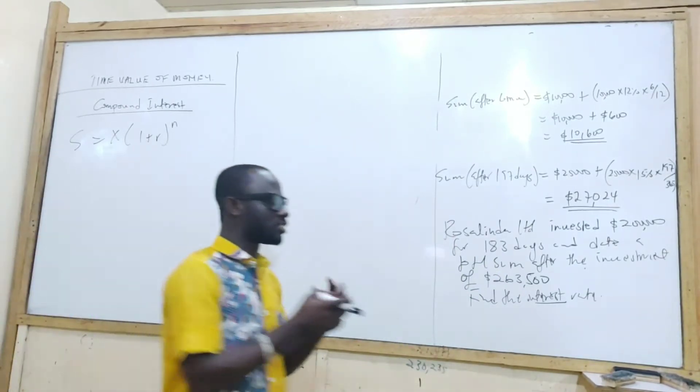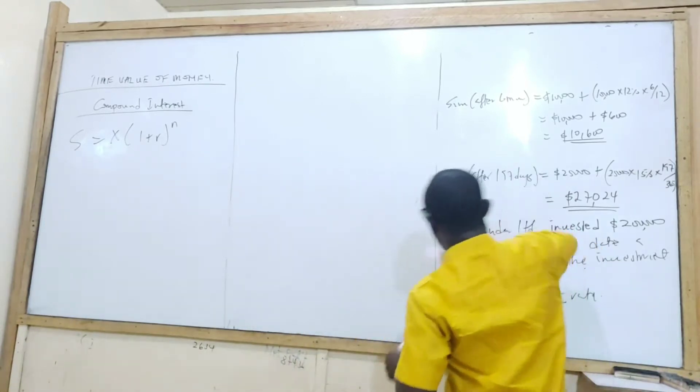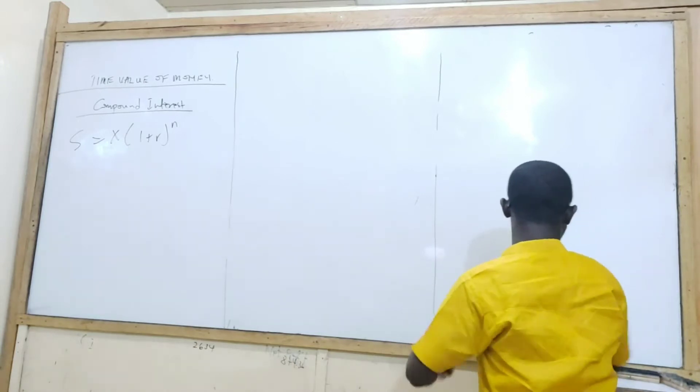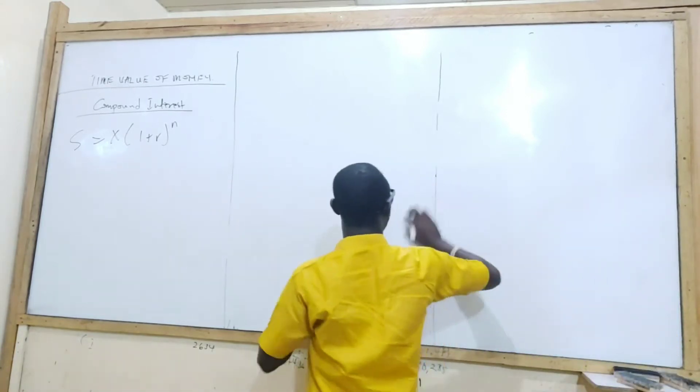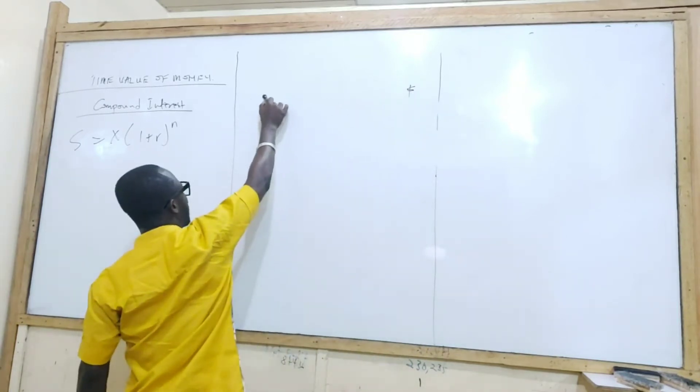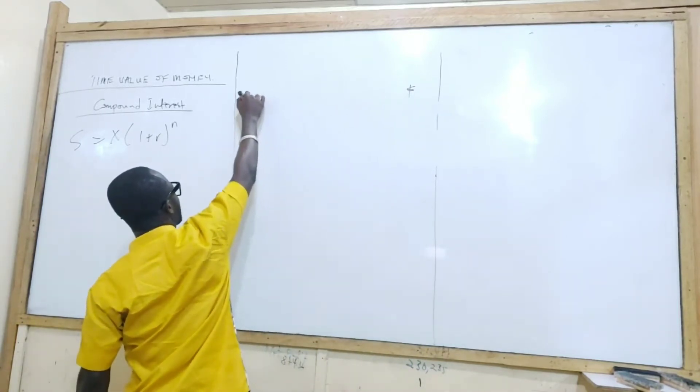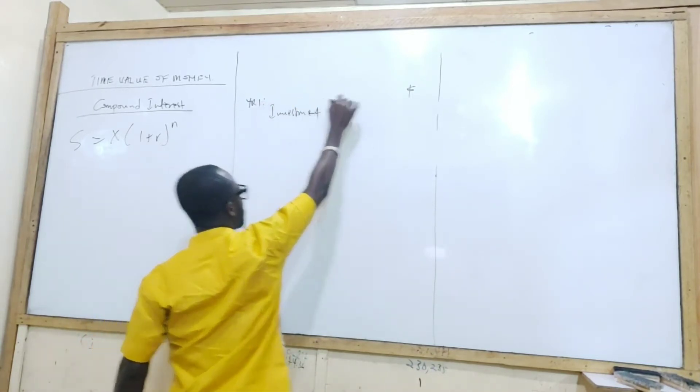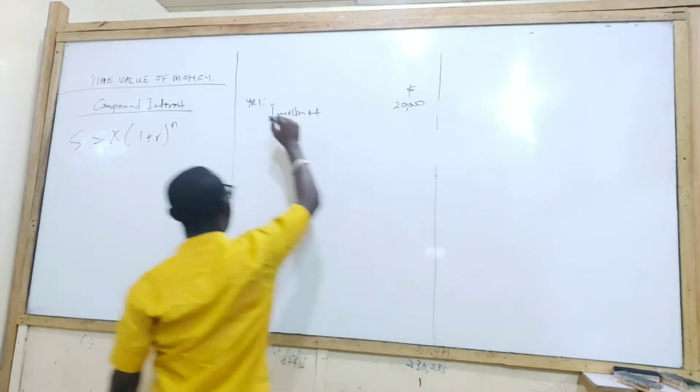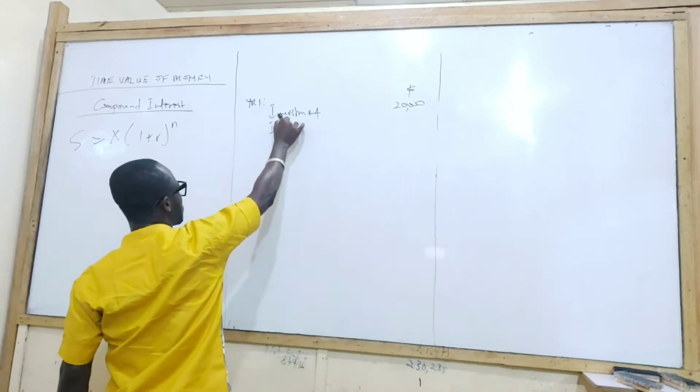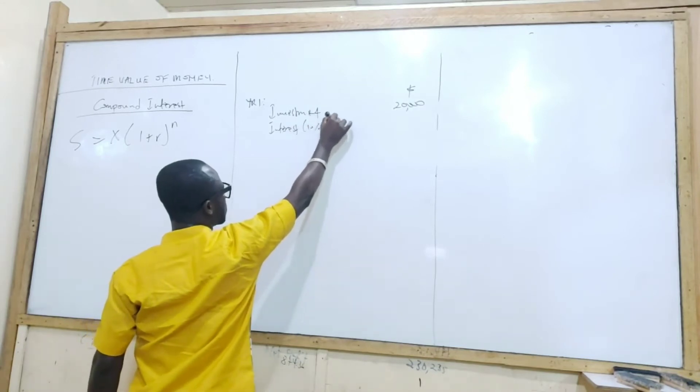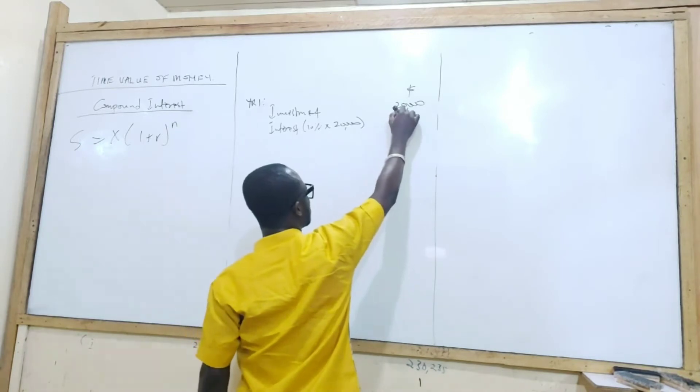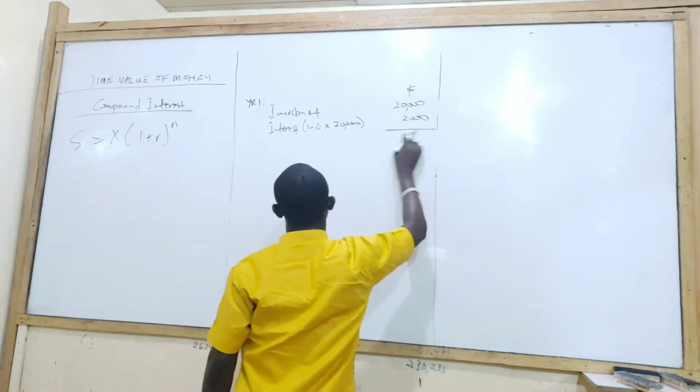Now when it comes to compound interest, let me do the traditional approach and then use the formula as well, so you get the understanding well. So let's slash our currency sign, investment. So year one, how much are you investing? $20,000. So at what interest rate? Interest will be 10% of $20,000, and that will be $2,000.